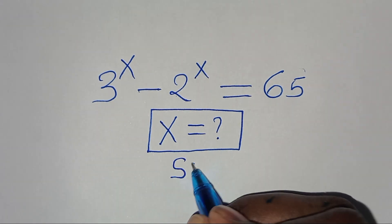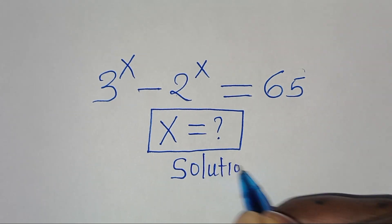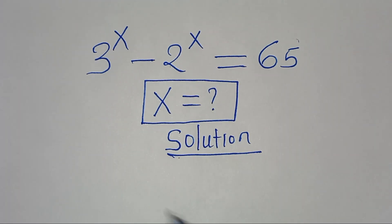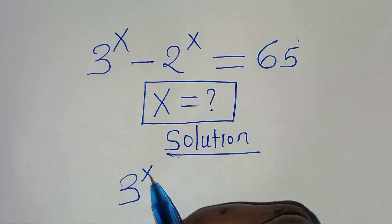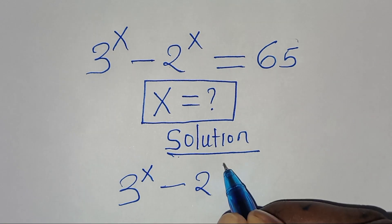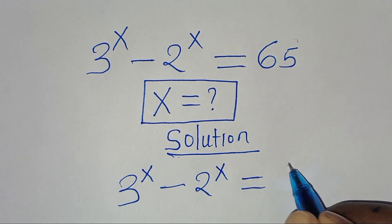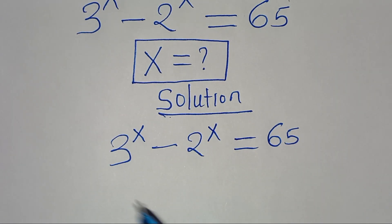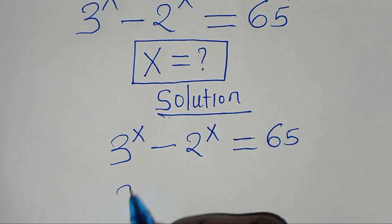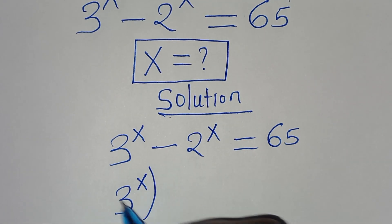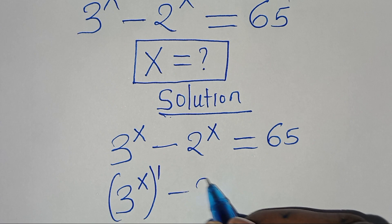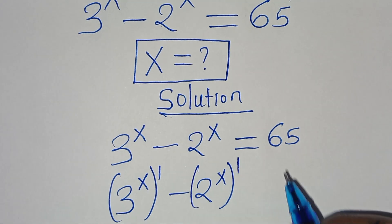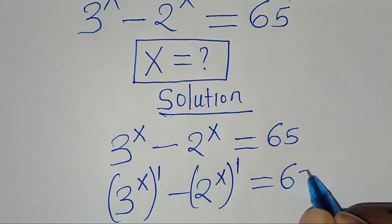Let's provide a solution from here. We have 3 to the power of x subtract 2 to the power of x, this is equal to 65. We can express this as 3 to the power of x raised to the power of 1, minus 2 to the power of x raised to the power of 1, this is equal to 65.